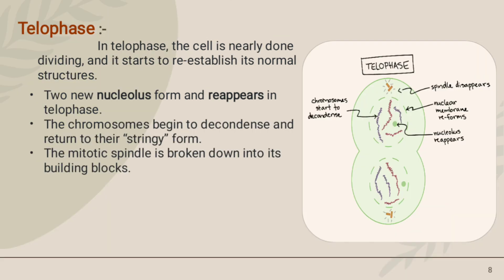In Telophase, the cell is nearly done dividing and it starts to reestablish its normal structure. Two new nucleoli form and reappear. The chromosomes begin to de-condense and return to their stringy form. The mitotic spindle is broken down into its building blocks.